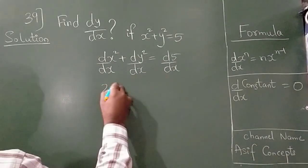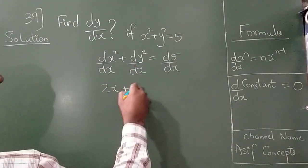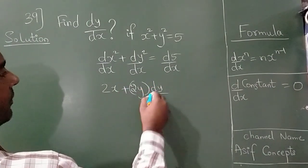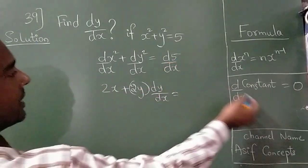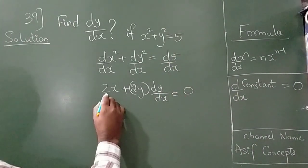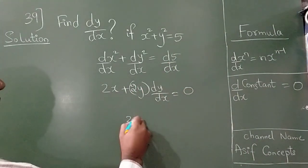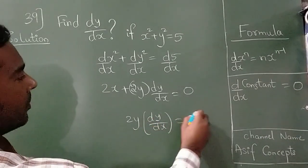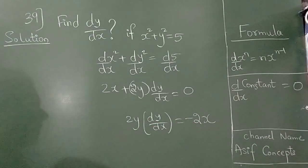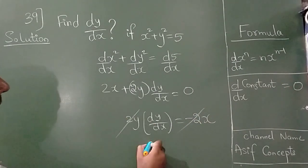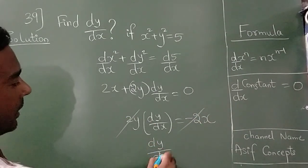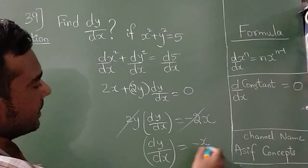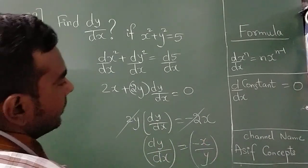I can write 2x, and this can be written as 2y dy/dx. Since 5 is a constant, it equals 0. Now take 2x to the right-hand side, so it becomes minus 2x. The two's cancel, so the final answer is dy/dx = −x/y.